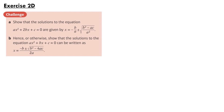The next question is from exercise 2D. Part A says: show that the solutions to the equation ax² + 2bx + c = 0 are given by x equals minus b over a, plus or minus the square root of b² minus ac, all over a².